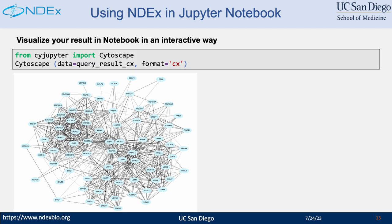If you have a network in CX format, you can also render it in Jupyter Notebook using our Jupyter Notebook plugin. It is very simple to do that — you simply call the Cytoscape function, pass in the data, and tell the function which format the data is in. The network will be rendered below that cell in an interactive way. Users can move those nodes around, zoom in, and zoom out to inspect the data in that network.